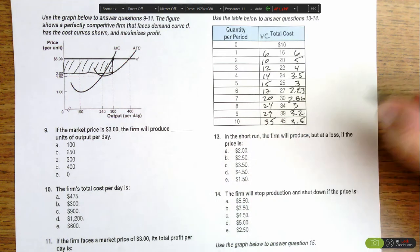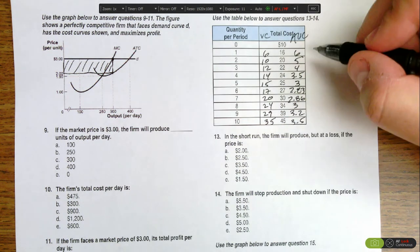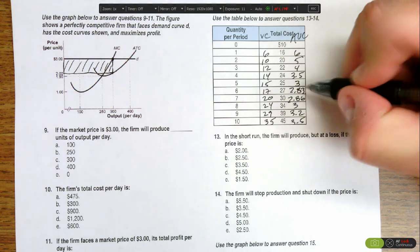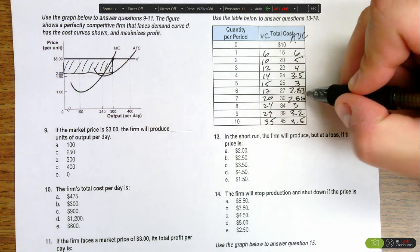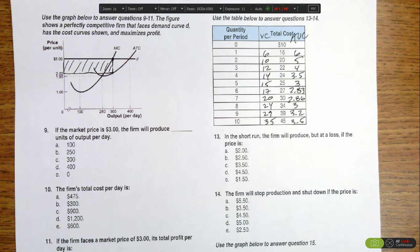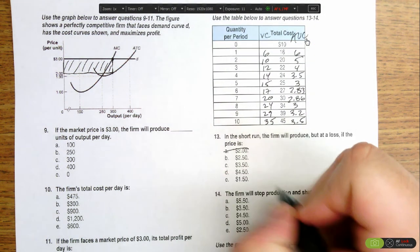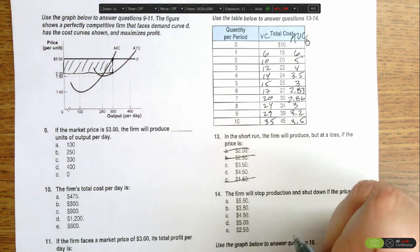So our average variable cost curve shows us that the shutdown price is $2.83. So the price for the answer to this has to be at least above $2.83. Given that, that eliminates option A, it eliminates option B, and eliminates option E.